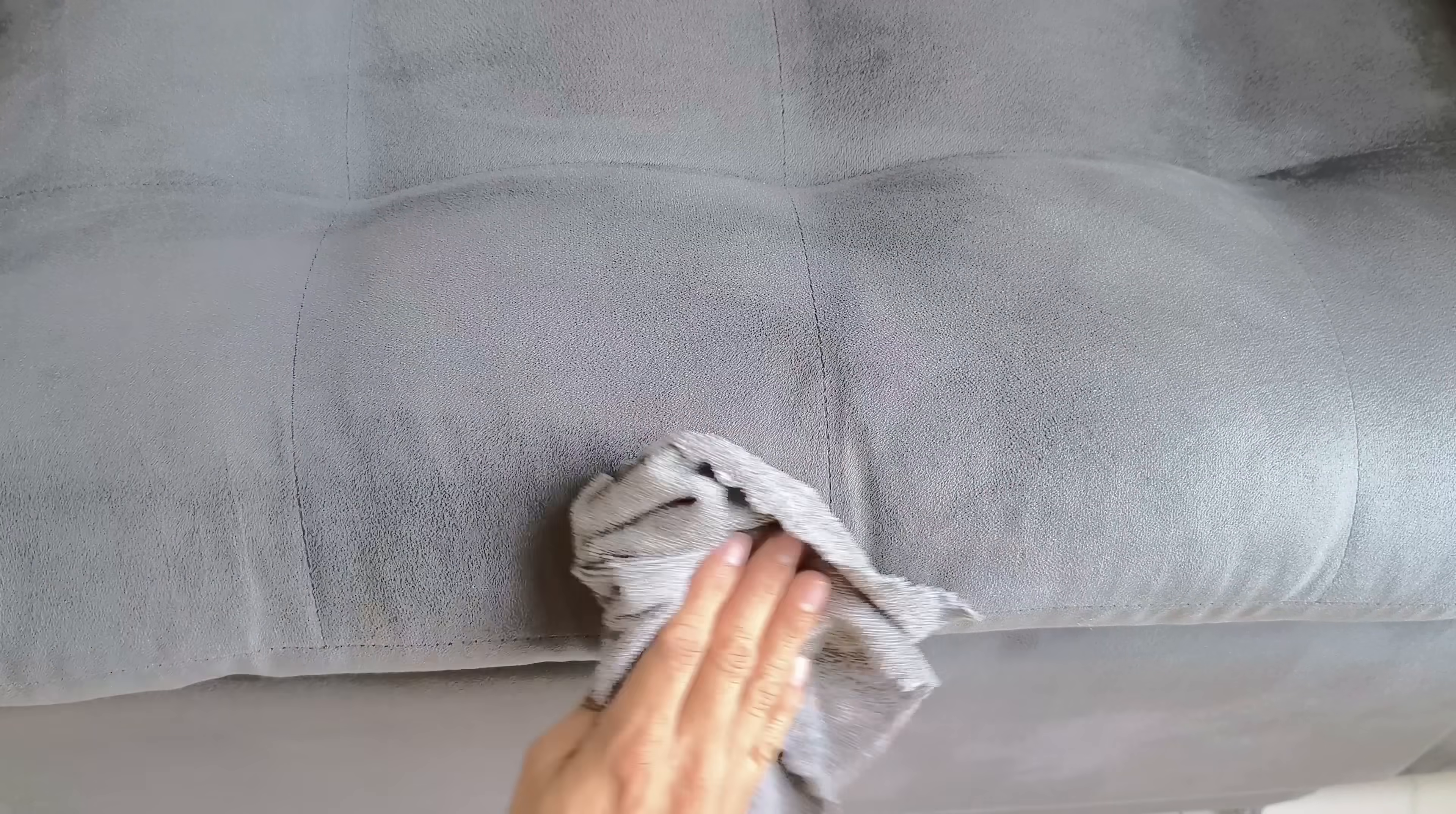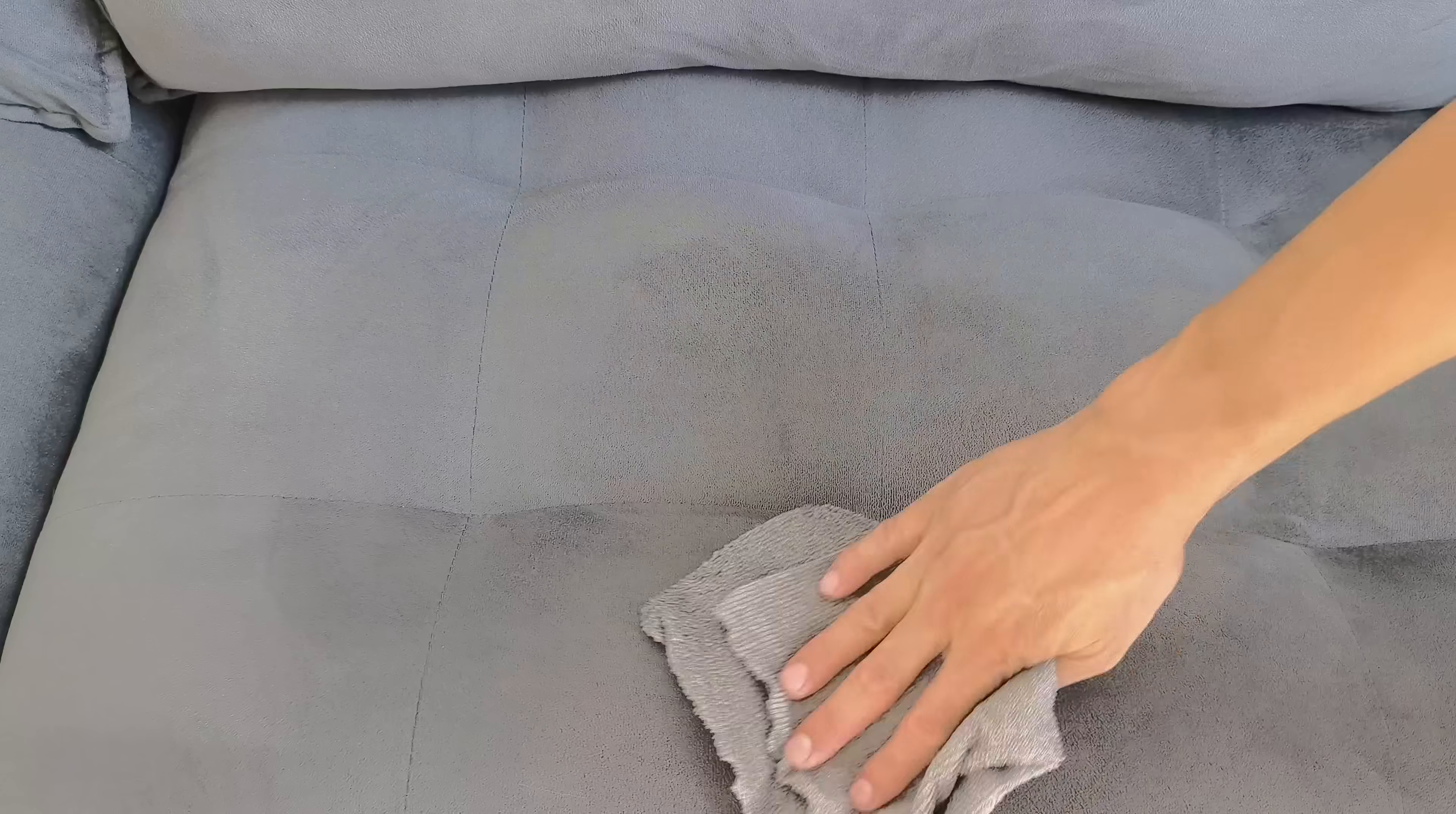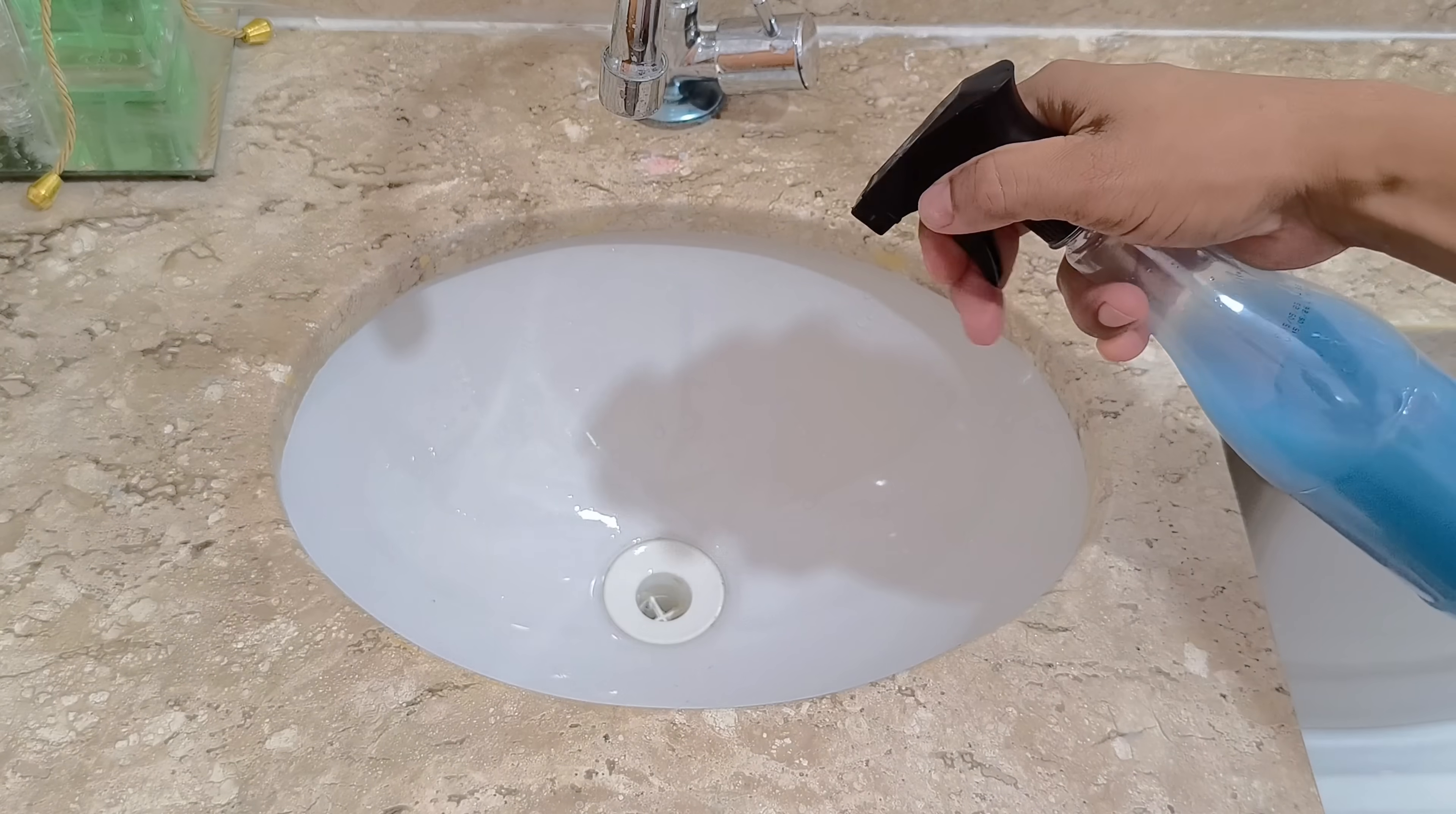The vinegar helps eliminate microorganisms and mold, while the fabric softener leaves everything with a clean and comfortable feel. This formula is especially useful in damp, under-sun homes, or in areas where pests are more common.